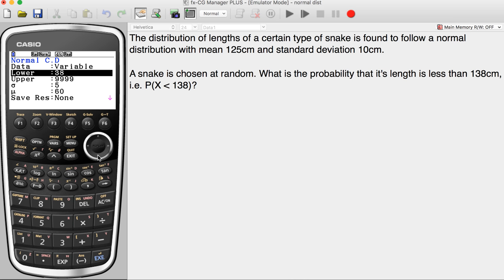And we have to start entering in some data. So make sure you've got variable for the top one. Second one, your lower end is going to be negative something really big. And your upper limit is going to be 138. The standard deviation is 10. And the mean is 125.